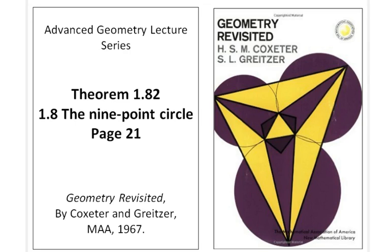Welcome to a new advanced geometry lecture. We will have a look at theorem 1.82 in section 1.8 page 21 from the book Geometry Revisited by Coxeter and Greitzer. This theorem is basically about the fact that the center of the nine-point circle is on the Euler line. So let's have a look at the statement and the simple view of this theorem.